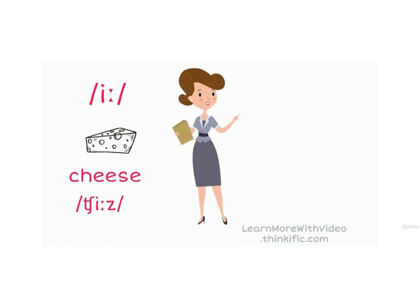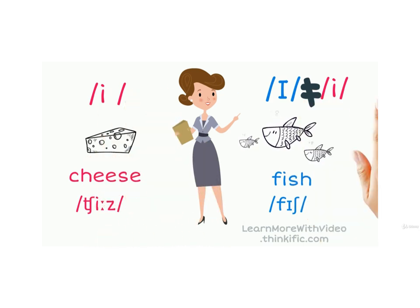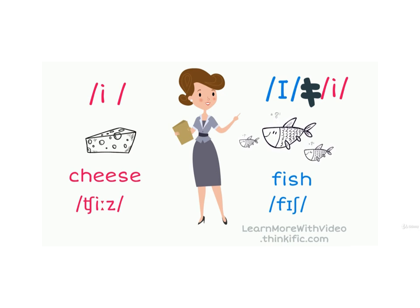لا يمكن أن تستبدل الرموز بكابتو. Small I ليست مثل كابتو I. كابتو I is like fish. Small I is like cheese. بعض الكتب والمواقع الإلكترونية لا تضع نقطتين أمام long vowels، فإذا رأيتم هذه الرموز بلا نقطتين فاعلموا أنها نفس الرمز والنطق.